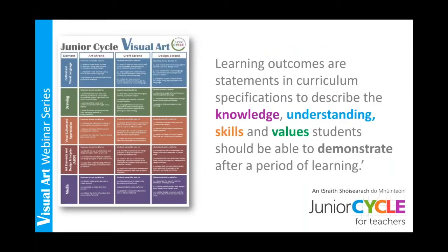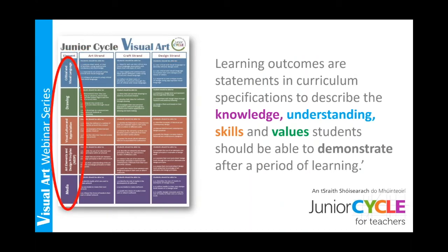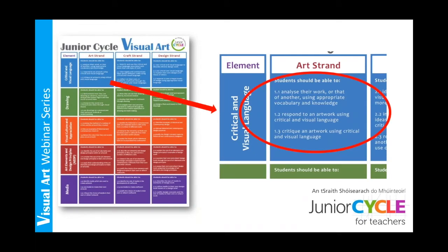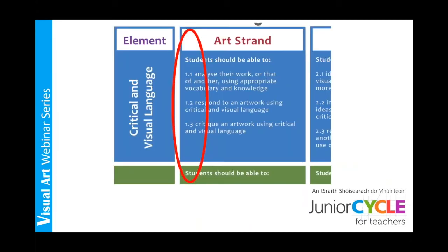Here is our learning outcome poster. You can download it on jct.ie in the visual art resources sections. Across the top you can see the three strands of art, craft and design. Along the side you can see the five elements that we have just looked at. All of the learning outcomes are grouped by both the strand and the element. If we take a closer look at the strand of art and the element of critical and visual language, we can see the numbering along the side. These numbers are to support planning and not to suggest a hierarchy of importance.